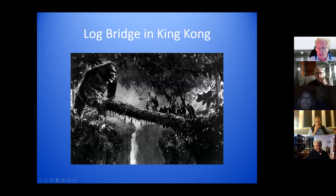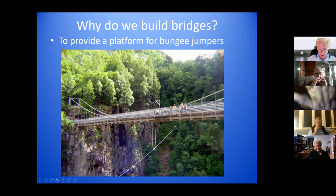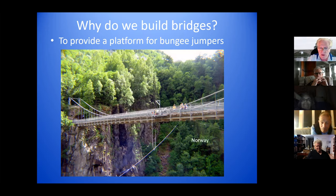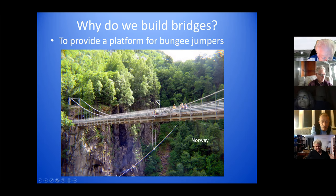The first bridges were log bridges, and this is taken from the first King Kong movie. You can see that a bridge is only as reliable as its supports. If you remember from the movie, these guys fall off the bridge when he picks it up. There's another reason we build bridges — to provide a platform for bungee jumpers. This is in Norway, and Judy and I took this picture as we were on our way up to a power plant.